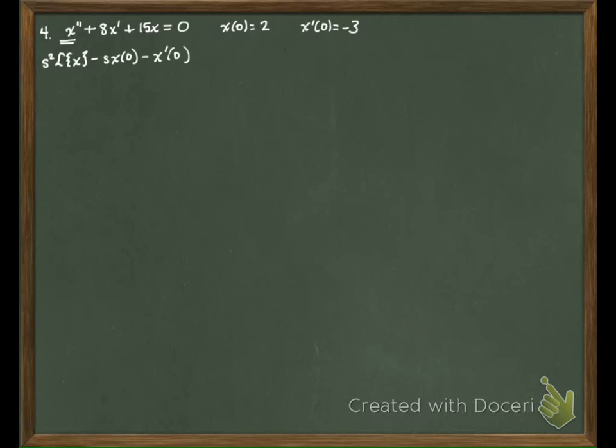For 8x prime, we get 8s Laplace of x minus 8 times x of 0. Then we still have our plus 15 Laplace of x, and on the other side we have the Laplace of 0.